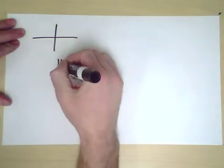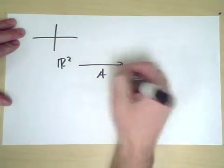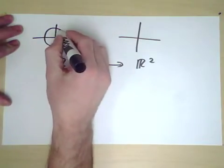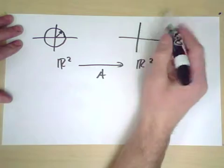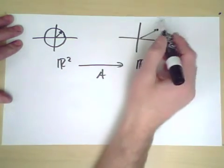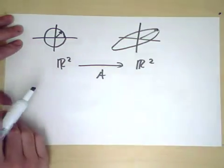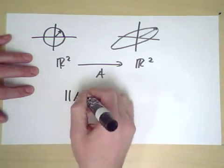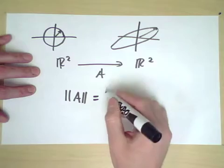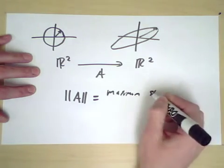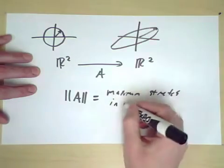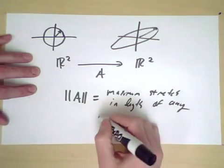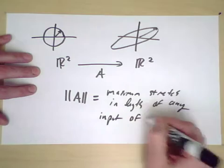We can consider the input of vectors in the circle, and each vector in the circle ends up somewhere. The circle is somehow distorted. And when we ask for the norm of A, we're really asking what is the maximum stretch in length of any input of length 1.